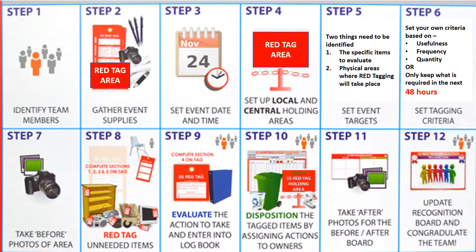Step 7: take a before photograph of that area of your zone. Step 8: do the red tagging — whatever material is not required by you, put a red tag on it. Step 9: evaluate the red tagging and note down in the logbook what items you have red-tagged. Step 10: dispose those red-tagged items to the red tag area and assign actions on them. Step 11: after removing the red-tagged items, take an after photo of that area of your zone. Step 12: update the recognition board and congratulate the team for completing the red tagging.